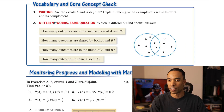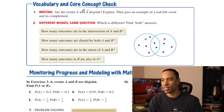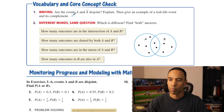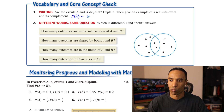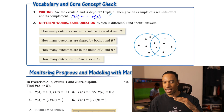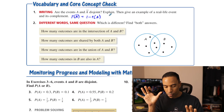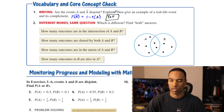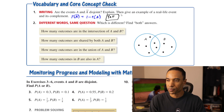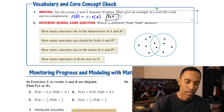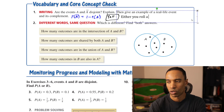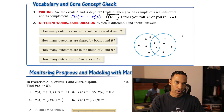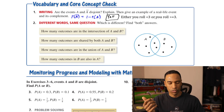For the vocabulary and core concept check: are events A and A-bar disjoint? Yes — probability of A-bar is 1 minus probability of A. A and A-bar are mutually exclusive because if one happens, the other doesn't. For example, on a dice roll, either you roll less than three or you roll greater than or equal to three — you can't roll both. Or simply: you flip heads or tails.